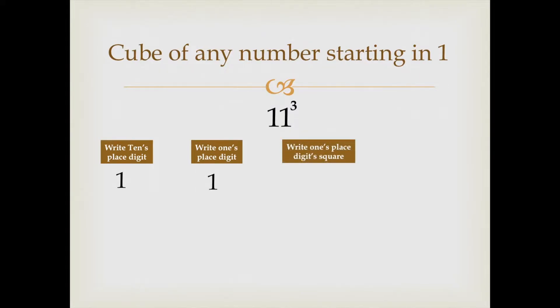In the third part, we take the square of the ones place number, which is 1. The square of 1 is 1. In the fourth and last step, we take the cube of the ones place number. The cube of 1 is 1.